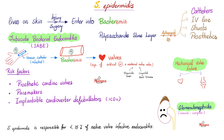Thanks to an injury, surgery, or IV line, it enters the blood — causing bacteremia. It can reach the heart, causing bacterial or infective endocarditis, especially with artificial prosthetic mechanical valves or native valves weakened by rheumatic fever, rheumatic heart disease, or congenital heart disease. Risk factors include prosthetic cardiac valves, pacemakers, and implantable cardioverter defibrillators.